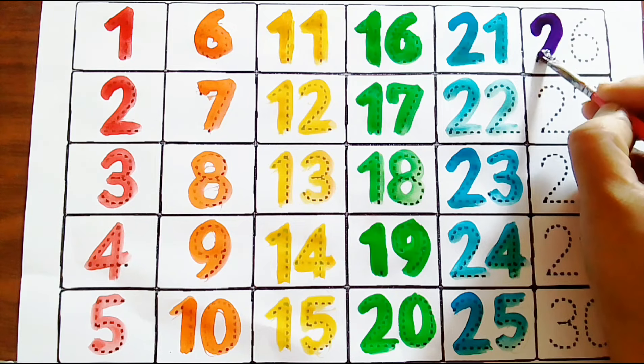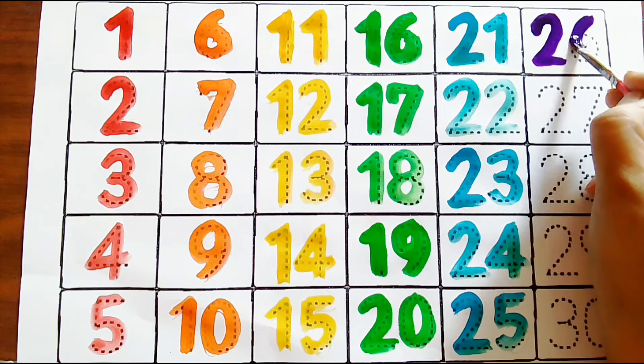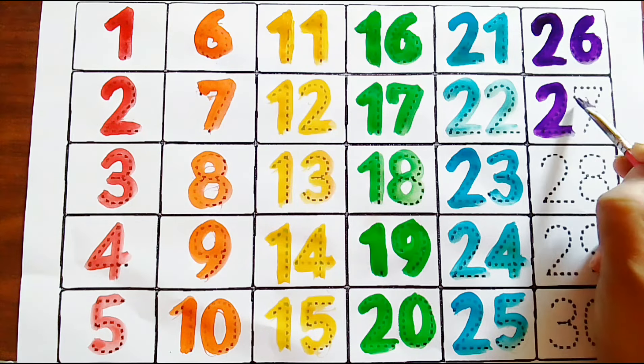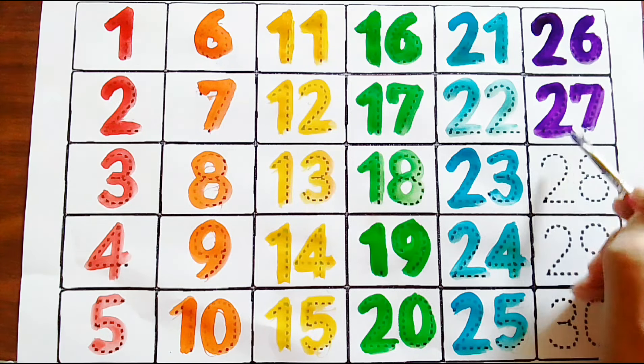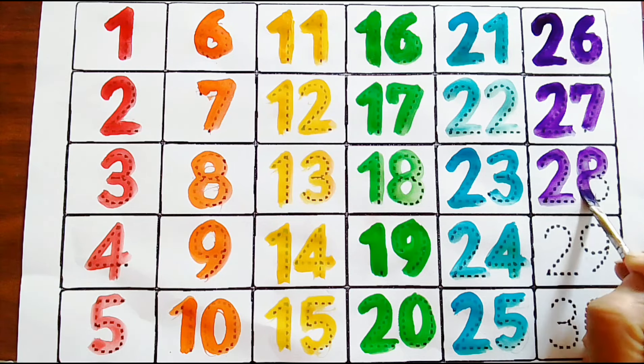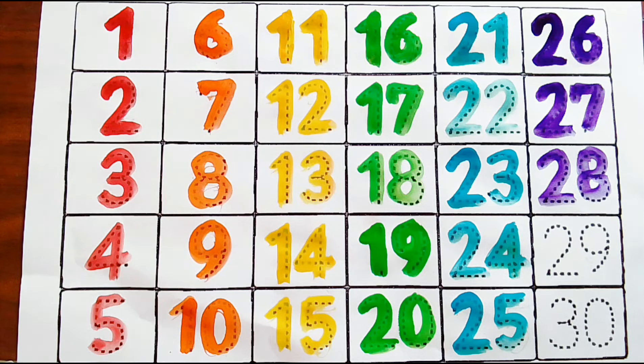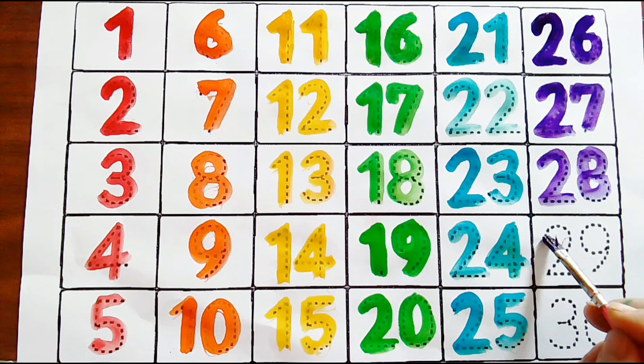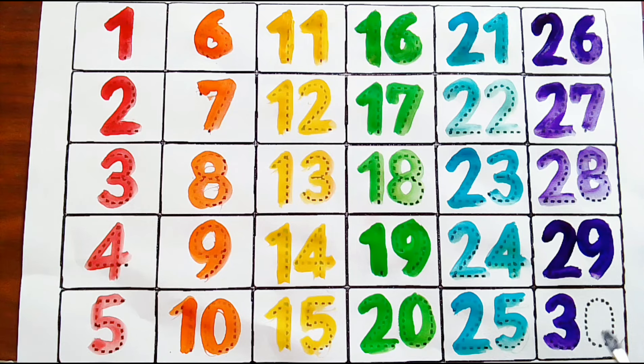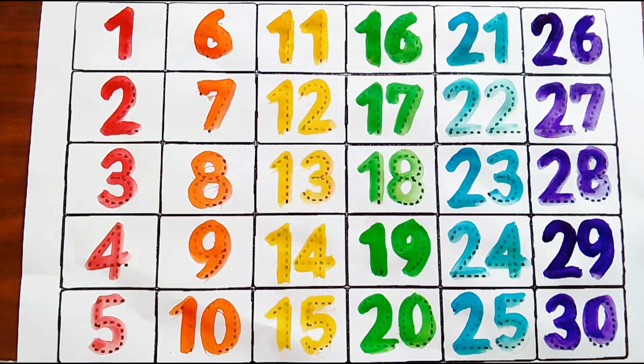Violet color: two six, twenty-six. Two seven, twenty-seven. Two eight, twenty-eight. Violet color: two nine, twenty-nine. Three zero, thirty. Three zero, thirty.